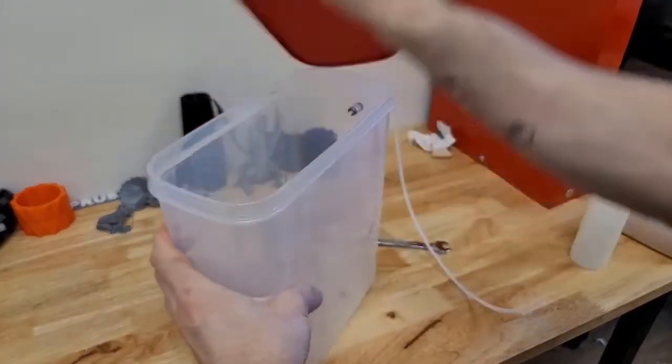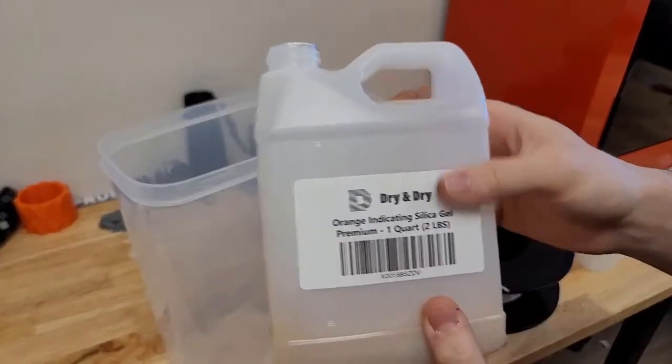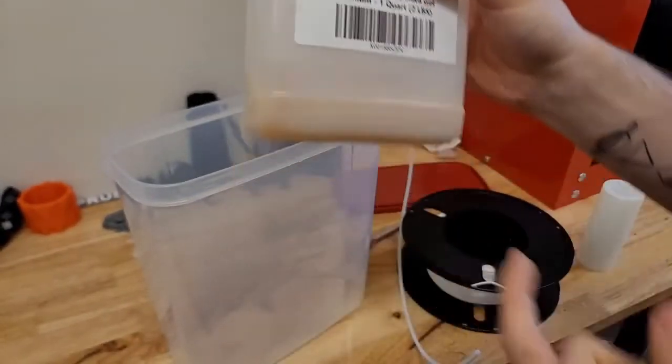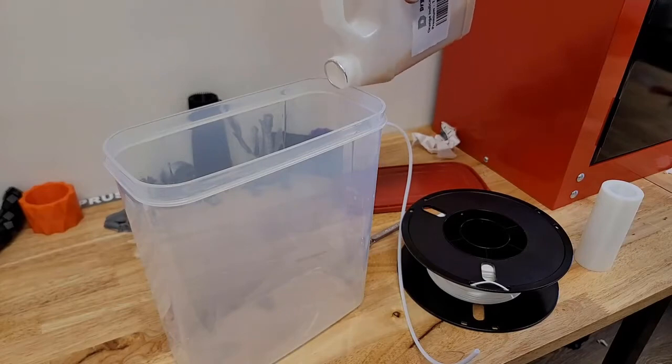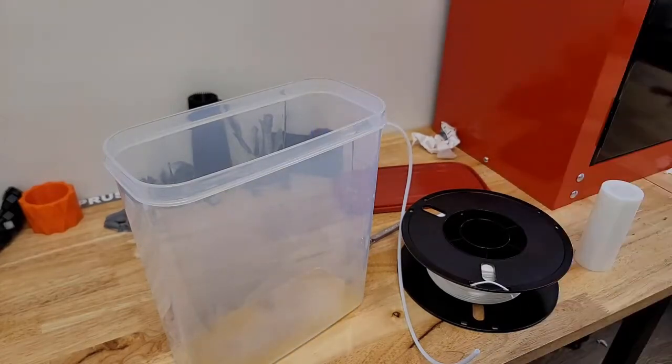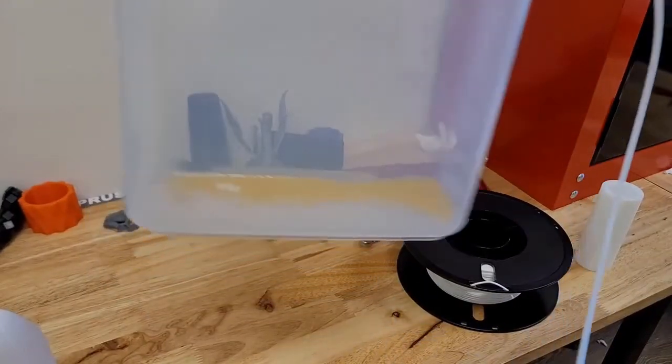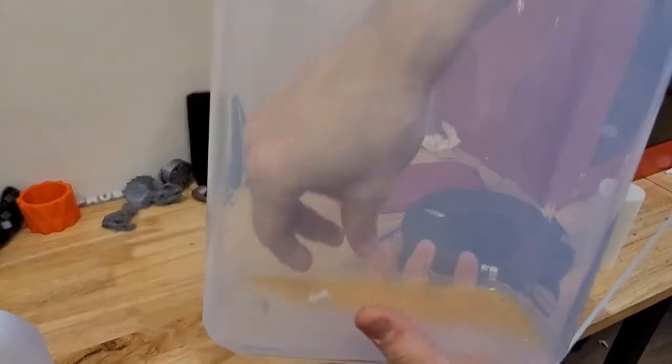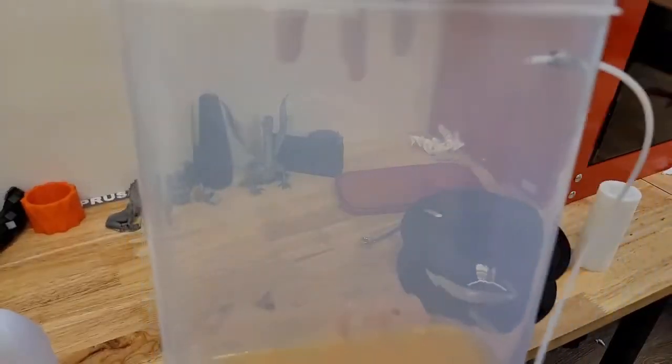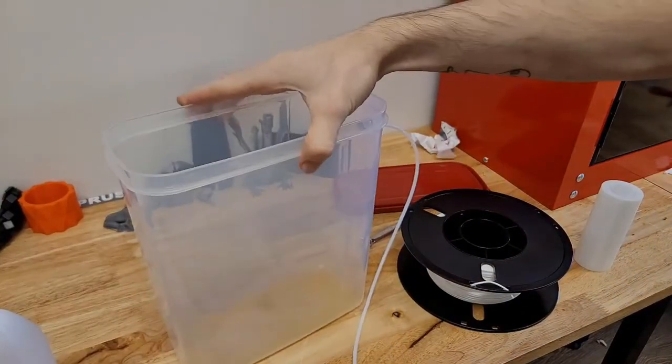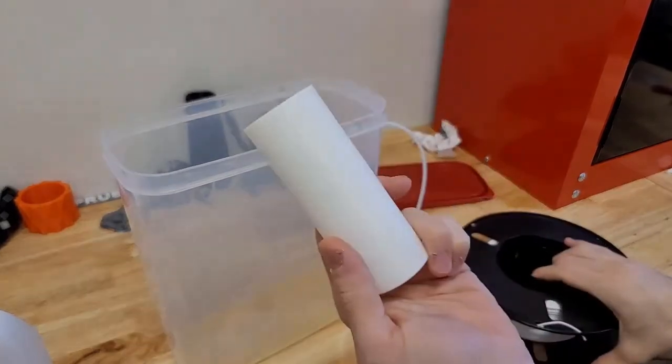Once you have the coupler and the bowden tube, you can start putting your dry beads in here. You can either get the little tiny packets of the silica or you can just pour it in directly, which I did there. You can also 3D print a tiny little container yourself if you want to do DIY. But it's not really worth it. I would rather just get the packets.